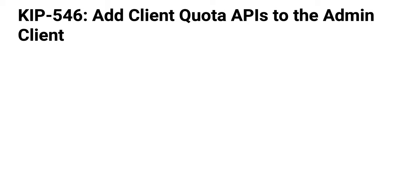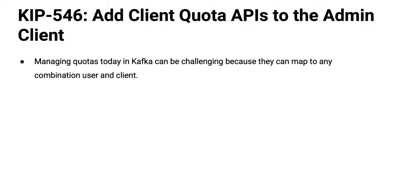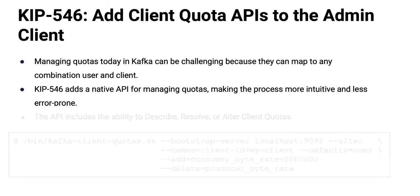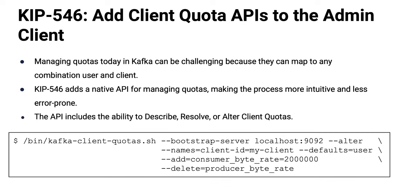KIP-546 makes it a little bit easier to administer quotas. Quotas are fundamentally complex to administer because you've got this combinatorial matrix of user and client, and you can have different quotas at each intersection in that matrix. What this KIP does is add that functionality to Admin Client — it's now a native API. And there's the shell command kafka-client-quotas that you can use from the command line if you don't want to code it from Java directly.